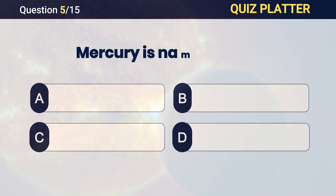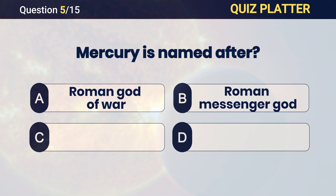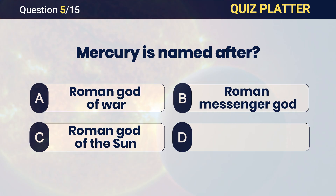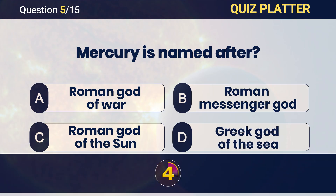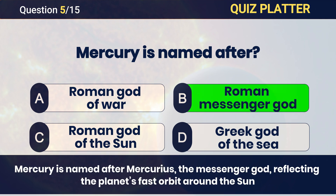Mercury is named after? Answer: B — the Roman Messenger God.